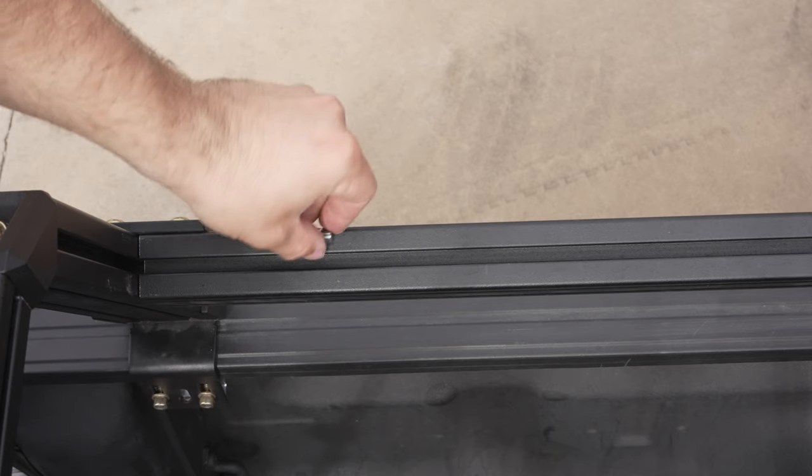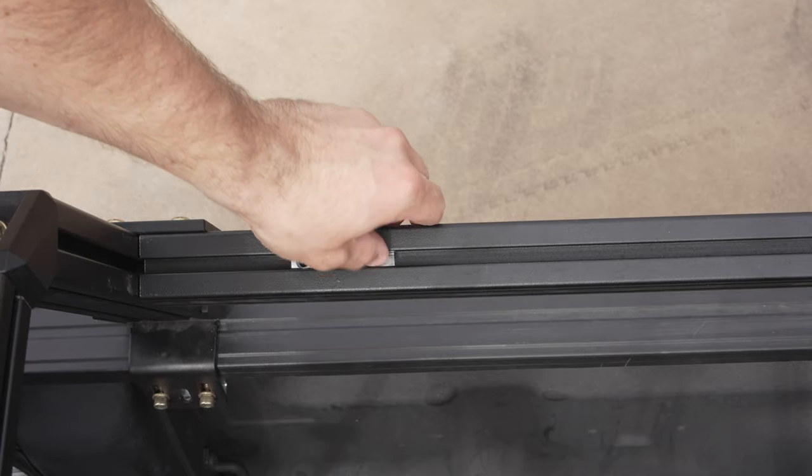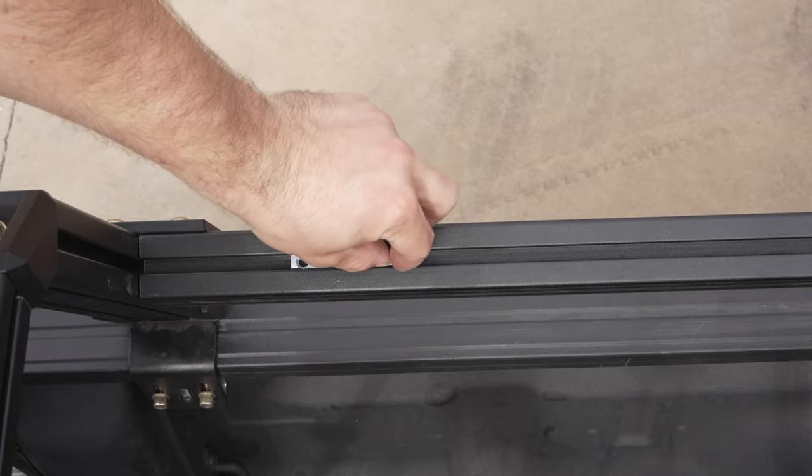Now, drop in a set of T-nuts and attach your bearing to the rack. We will do this on both the top and the bottom sides.